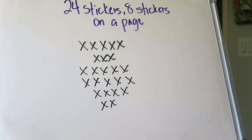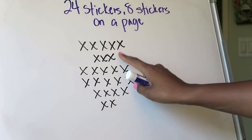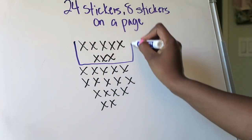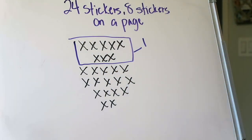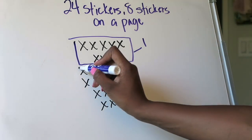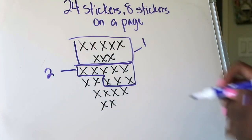I've already drawn out my counters to represent my stickers — there are 24 of them. I'm going to create groups of eight as many times as I can, and it has to be exactly eight. So I count out eight and box those in — that's group one. I keep going because I have stickers left, count out another eight, and box those in — that's my second group.